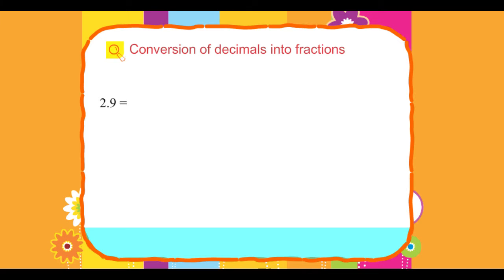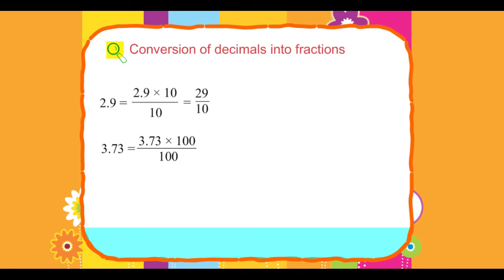2.9 equals 2.9 into 10 upon 10, equals 29 upon 10. 3.73 equals 3.73 into 100 upon 100, equals 373 upon 100.